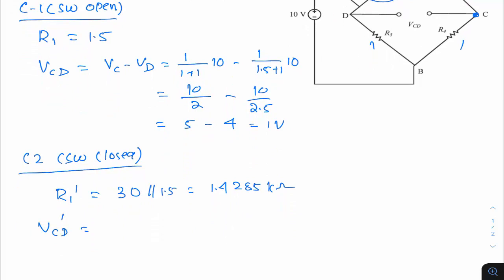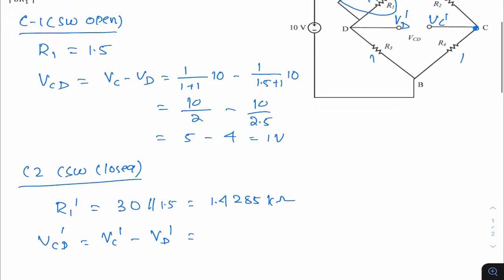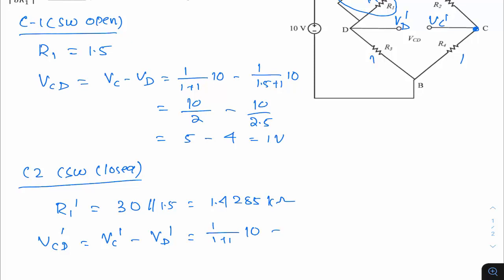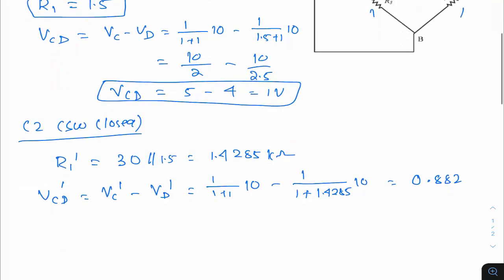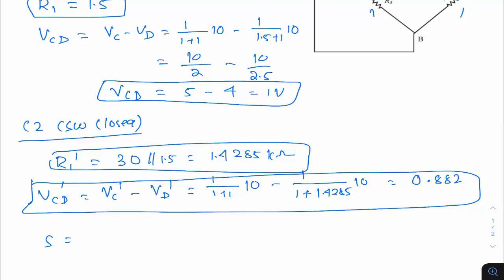With R1_dash = 1.4285 kΩ, Vc_dash = [1/(1 + 1.4285)] × 10 ≈ 0.882 × ... computing gives Vcd_dash ≈ 0.882 V. So with switch open: R1 = 1.5 kΩ, Vcd = 1 V; with switch closed: R1_dash = 1.4285 kΩ, Vcd_dash = 0.882 V.